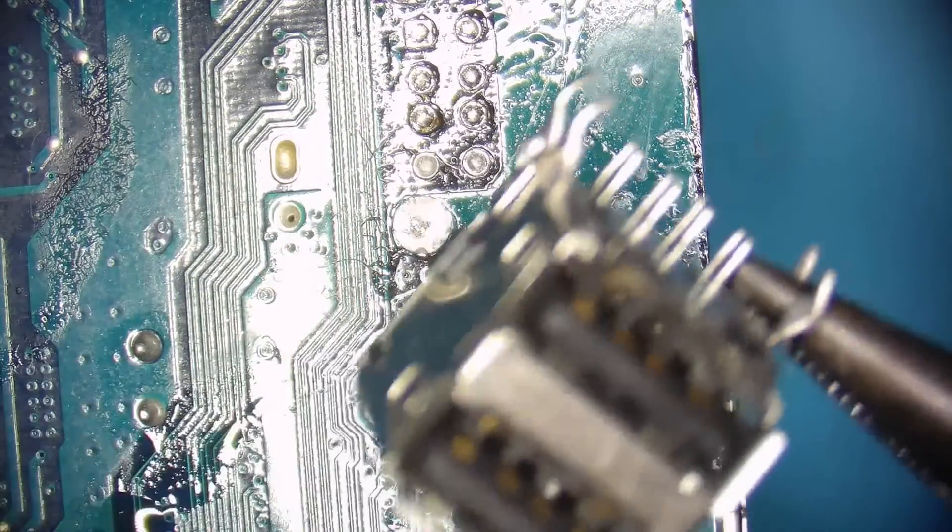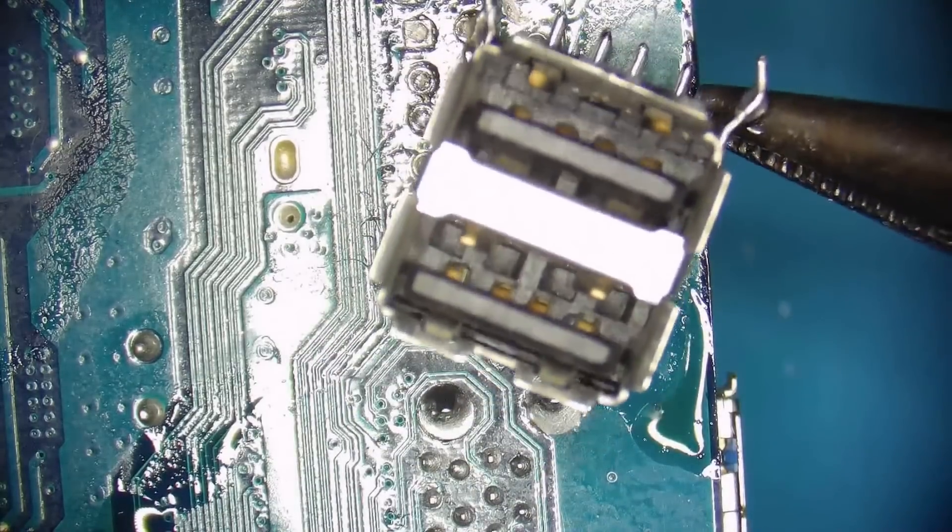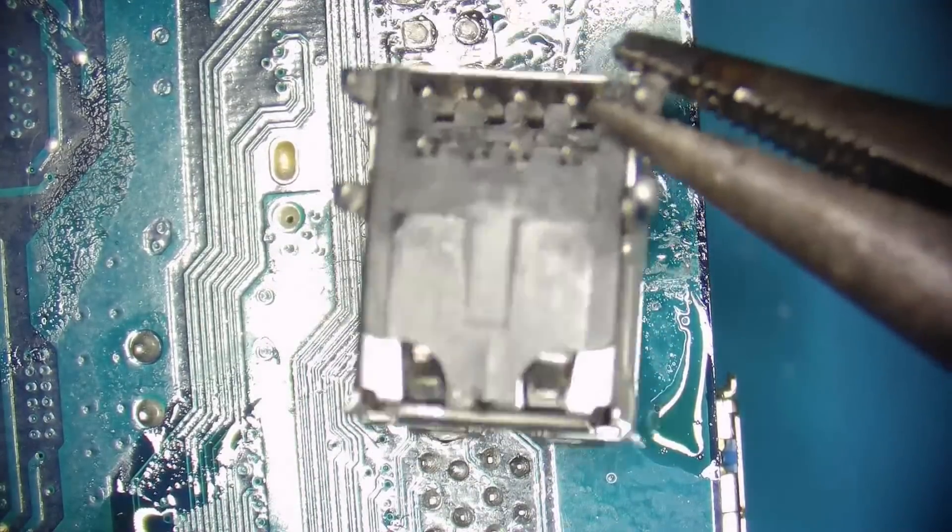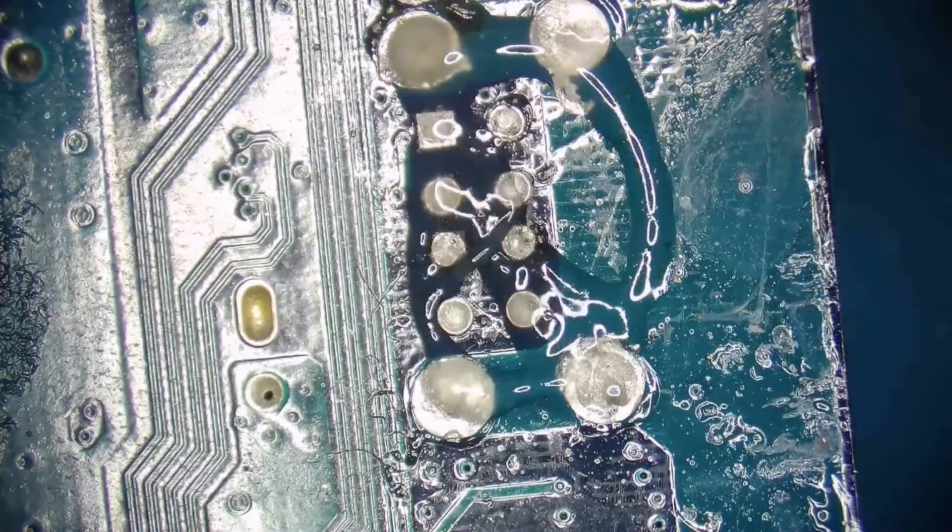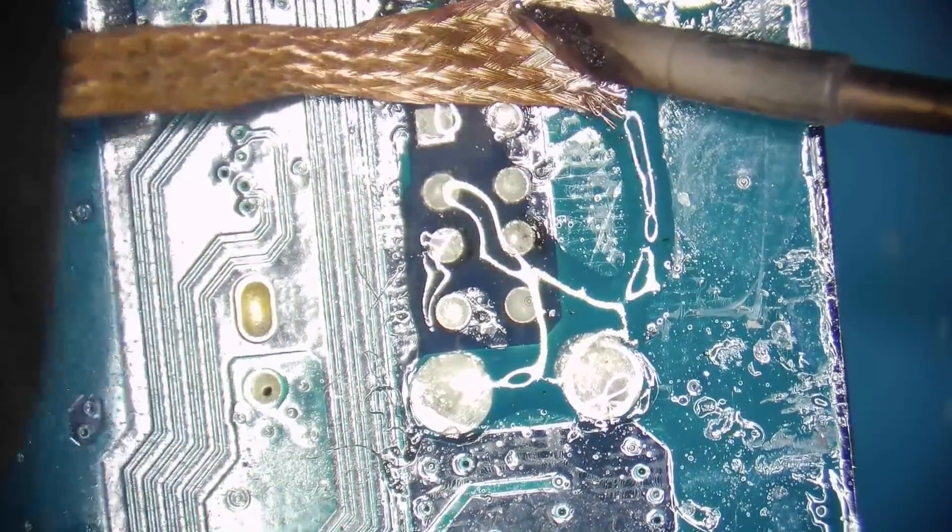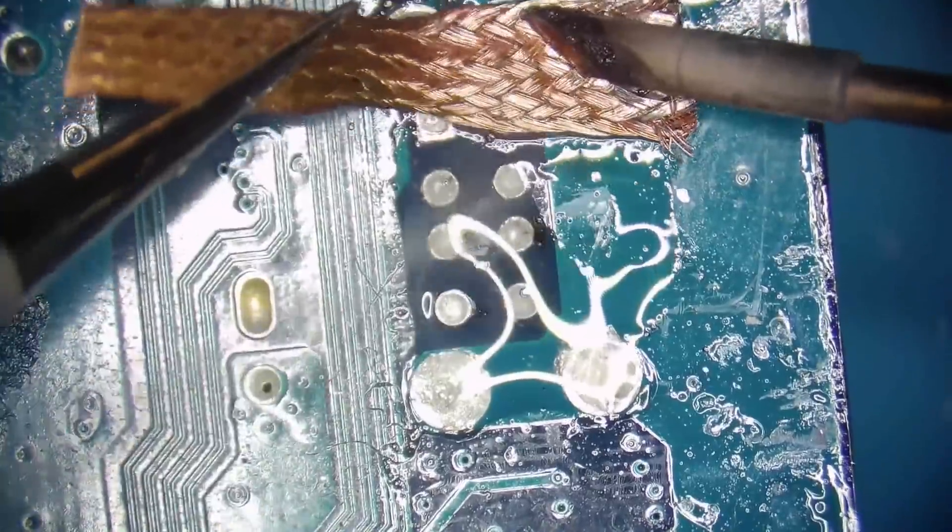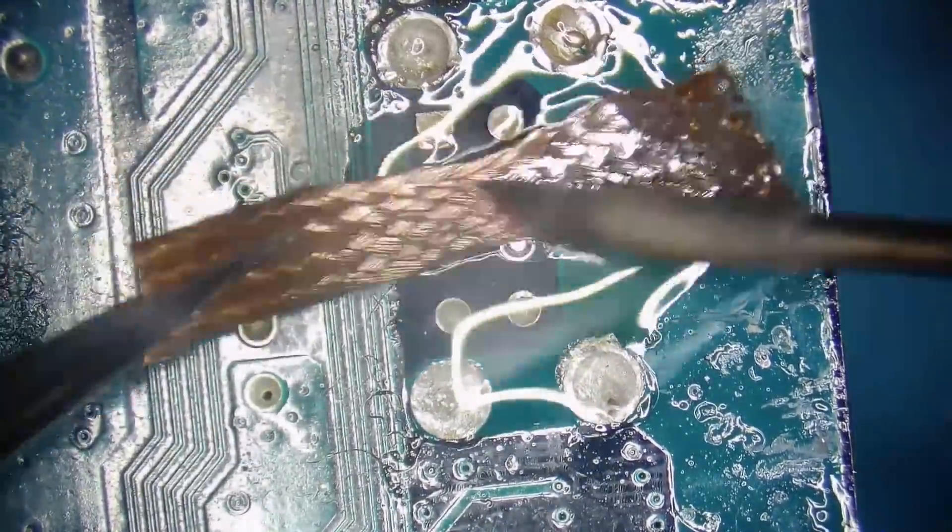There we have it, the connector is out with no visible damage. Next comes the tricky part. Now we need to apply a little more flux and then use a solder wick to clean all the holes in the PCB to be able to fit the new connector in place.